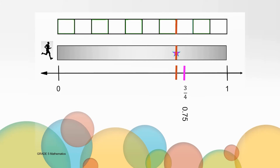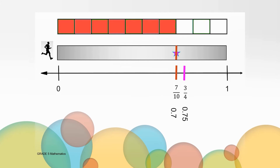How many tenths did it take to get to the red mark? That's correct — it took 7 tenths to get to the red mark. This runner ran 7 tenths of the track when he stopped to take his phone call. We can mark 7 tenths as a fraction or as a decimal.